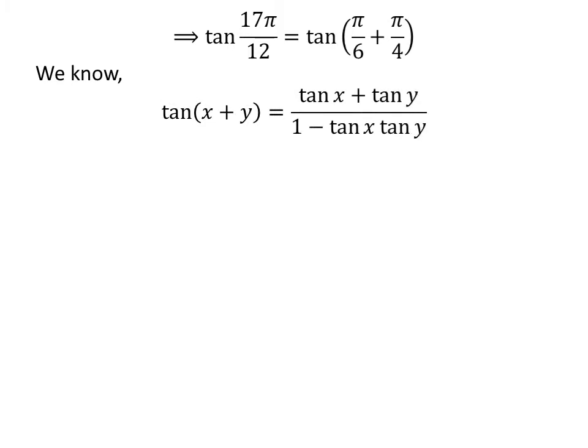We know the trigonometry identity: tangent of x plus y is equal to (tangent of x plus tangent of y) upon (1 minus tangent of x times tangent of y). The proof of this identity is given in the video appearing in the upper right corner, and the link is also given in the description section.